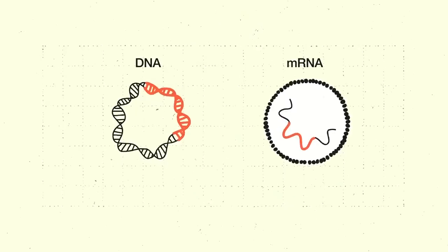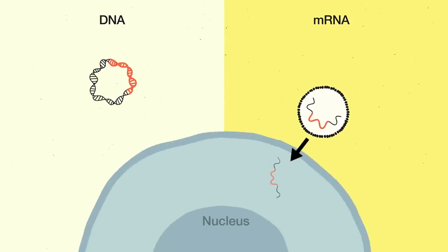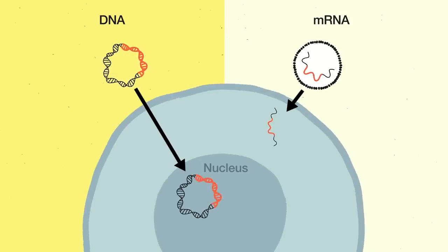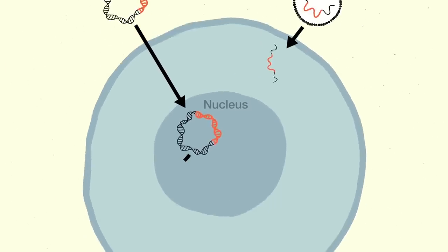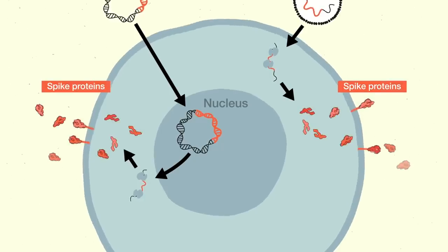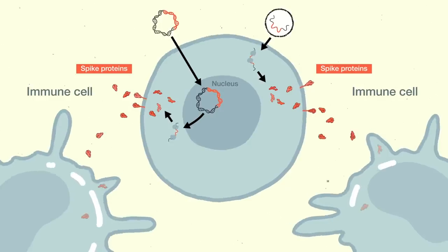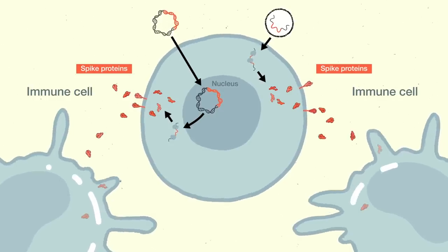Two types of genetic vaccines are being investigated for COVID-19: DNA and mRNA. mRNA needs to reach the cytoplasm of host cells, while DNA needs to enter the nucleus. Then this genetic material gets taken up by the cell's machinery, and the cell expresses the spike protein. These spike proteins are then recognized by the immune system, hopefully stimulating a protective response.